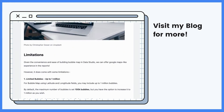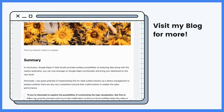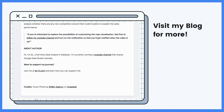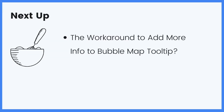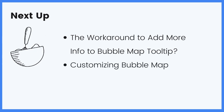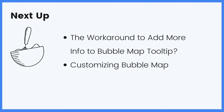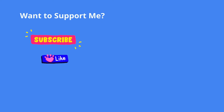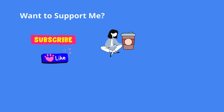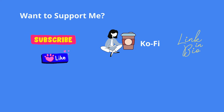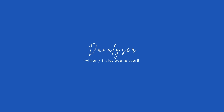If you want to learn more about draw map and how it works in Data Studio, feel free to visit my blog — I have a more detailed write-up there, and I'll put the link in the comments below. In the next tutorial we'll talk about the workaround to add more info to the bubble map tooltip, and another video will be about how you can customize your bubble map. If you think this video is great, please give me a like and subscribe to my channel. You can also support my journey at ko-fi.com — link will be in the description below. See you next time, bye bye!